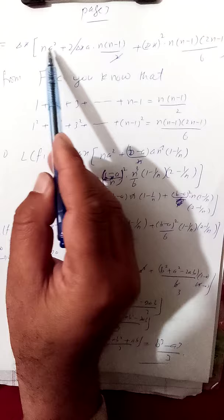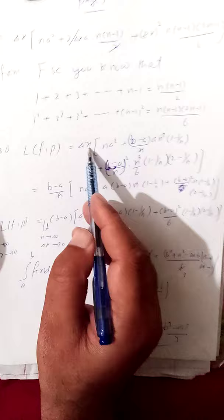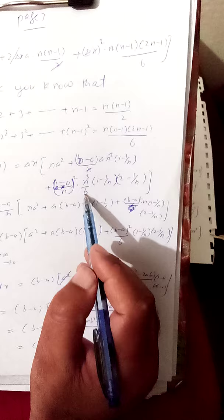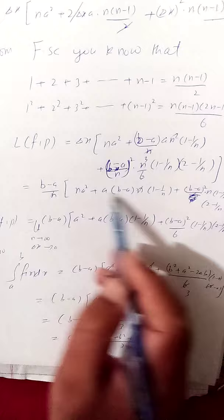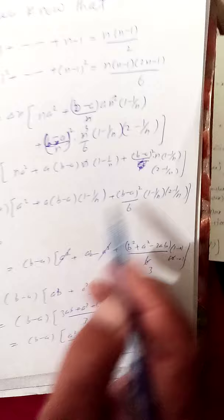Crossing 2 with 2, we get the lower sum L(f, P) times delta x. With delta x equal to (b−a)/n and taking n common: n²·(1 minus 1/n), and delta x² means (b−a)/n whole square. Taking n common gives n³·(1 minus 1/n)·(2 minus 1/n) divided by 6. Putting delta x equal to (b−a)/n and multiplying through the brackets, n cancels with n. Now taking n tending to infinity, delta x tends to zero.